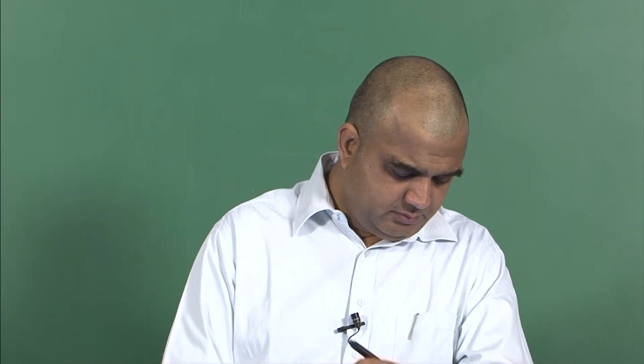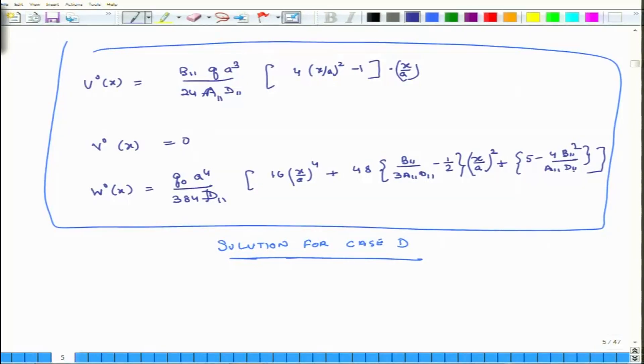Hello, welcome to advanced composites. Today is the second day of the ongoing week, which is the seventh week of the course. Yesterday we finished the solution for the last case we have been discussing over the last 2-3 days — Case D — and we came upon the solution as expressed in these equations for u naught, v naught, and w naught.